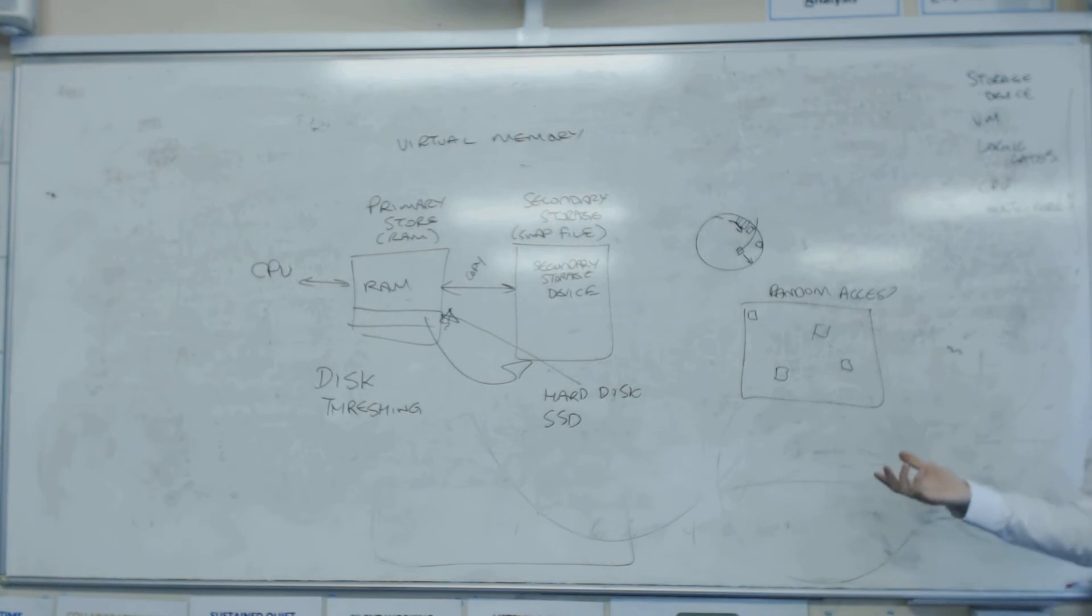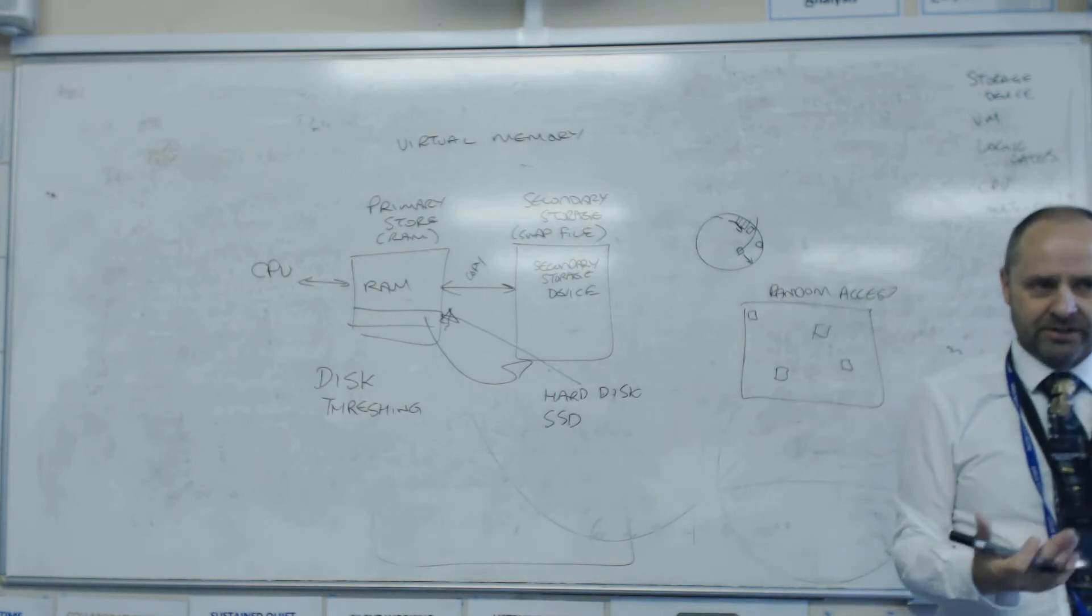Right, anyone got any questions about this storage and virtual memory? It's really important on the virtual memory that you talk about it's secondary storage, so anything there can't be accessed by the CPU, so that's why we have the swap process. Yes? You know when the RAM copies the data? The RAM doesn't do anything. The RAM is just storing data, it's not doing the copying. The operating system requests the copy.